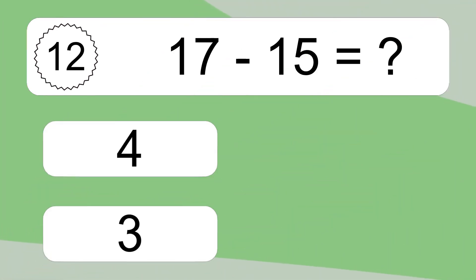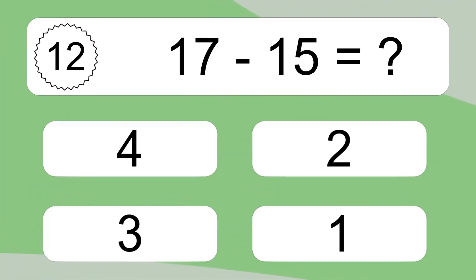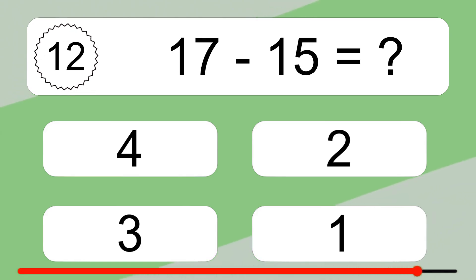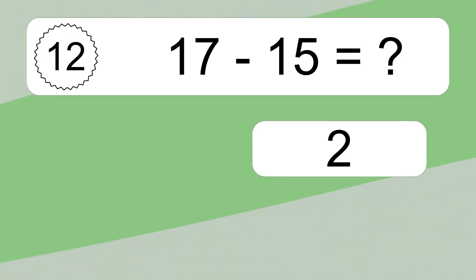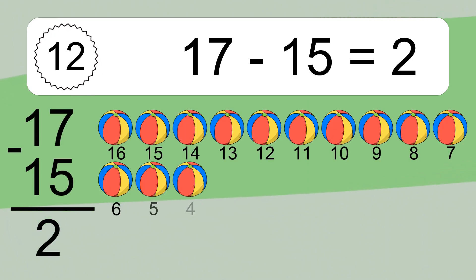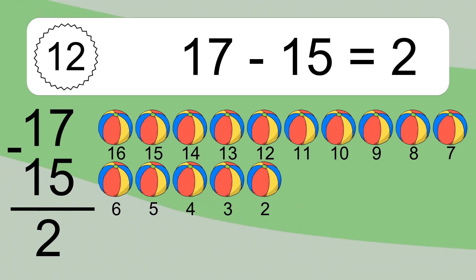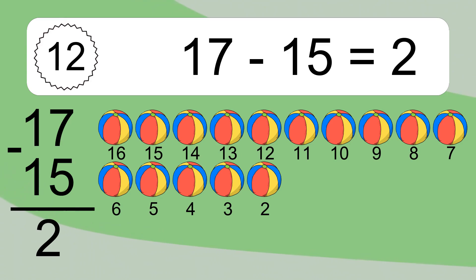17 minus 15 equals what? 17 minus 15 equals 2. Let's count it. 16, 15, 14, 13, 12, 11, 10, 9, 8, 7, 6, 5, 4, 3, 2.